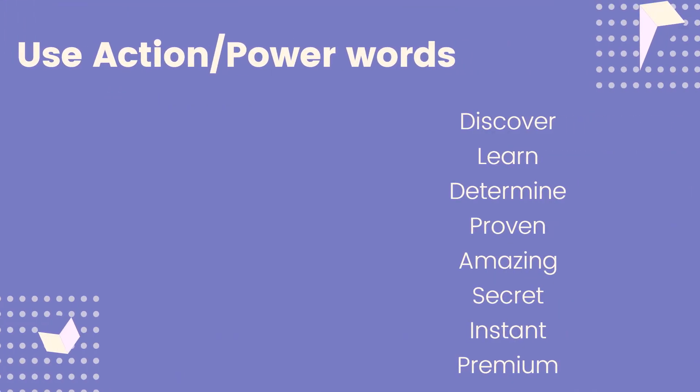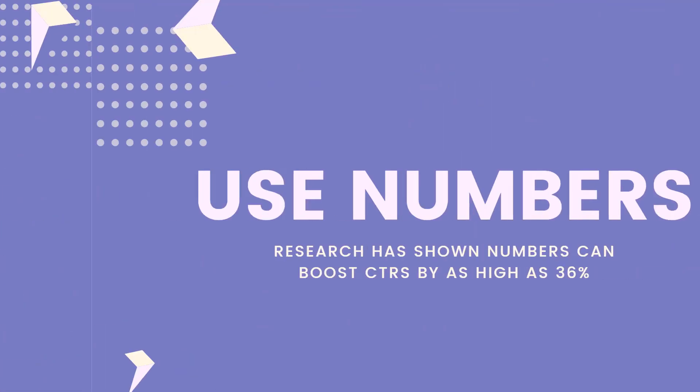The next tip is to use action or power words in your titles. Words like discover, learn, determine, proven, amazing, secret, instant, premium — you want to use these kinds of words in your titles.